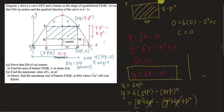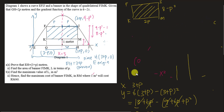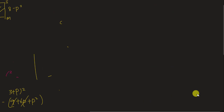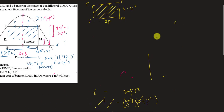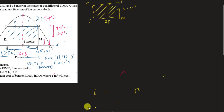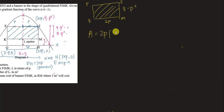So the rectangle FIMK has length 2P and width 8 minus P squared. The area L equals 2P multiplied by (8 minus P squared), which expands to 16P minus 2P cubed.